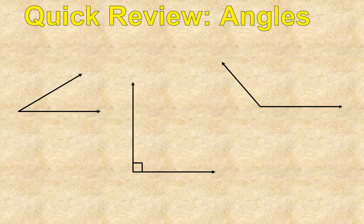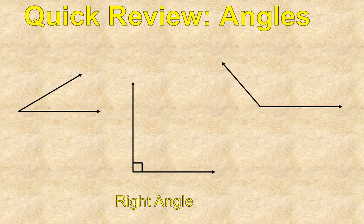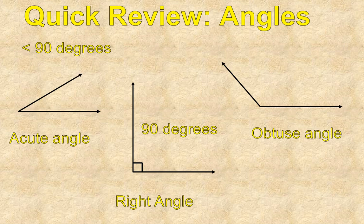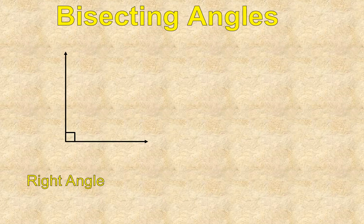Quick review. Angles. We had three types of angles, and this has gone over a little bit more in detail in the previous lesson, but a right angle is 90 degrees, an acute angle is less than 90 degrees, an obtuse angle is between 90 degrees and a straight line. That's an obtuse angle, so it's greater than 90 degrees, less than a straight line. So that's just a quick review.